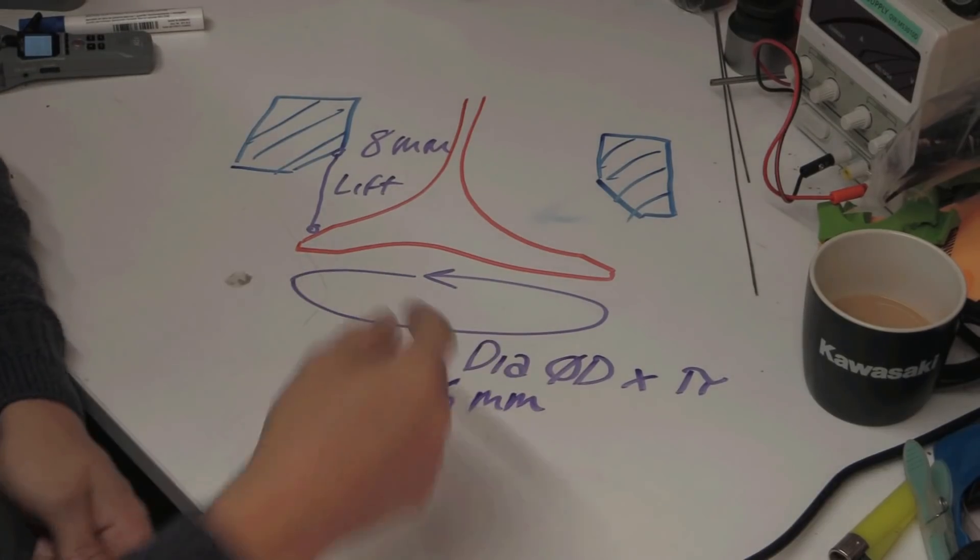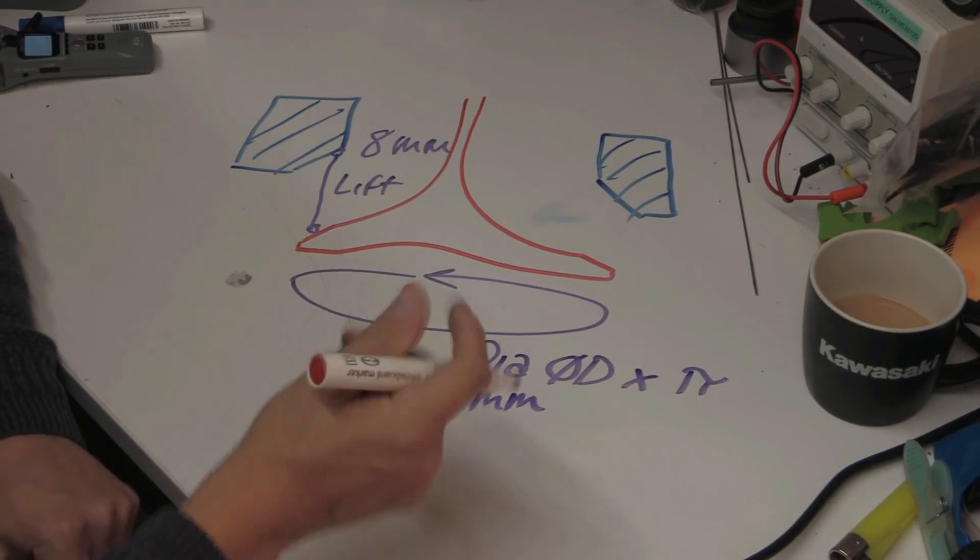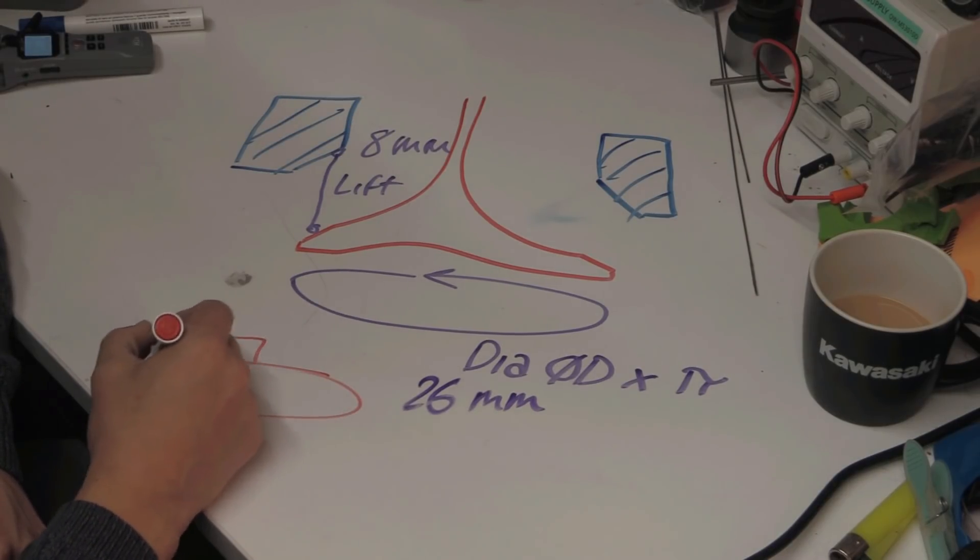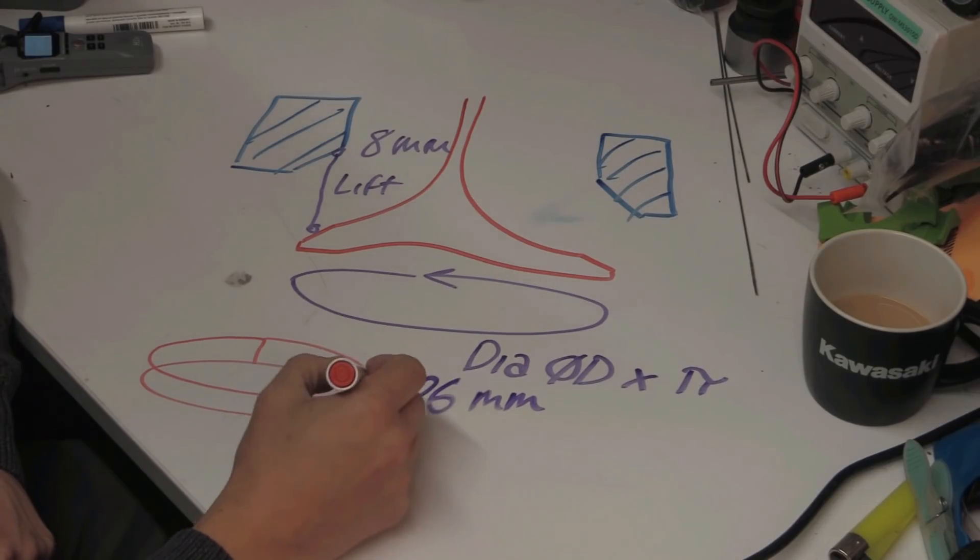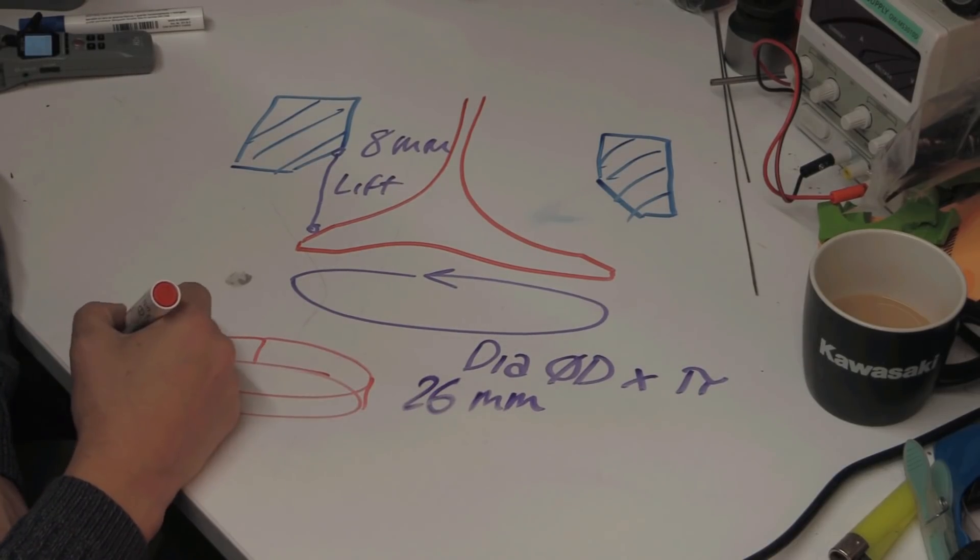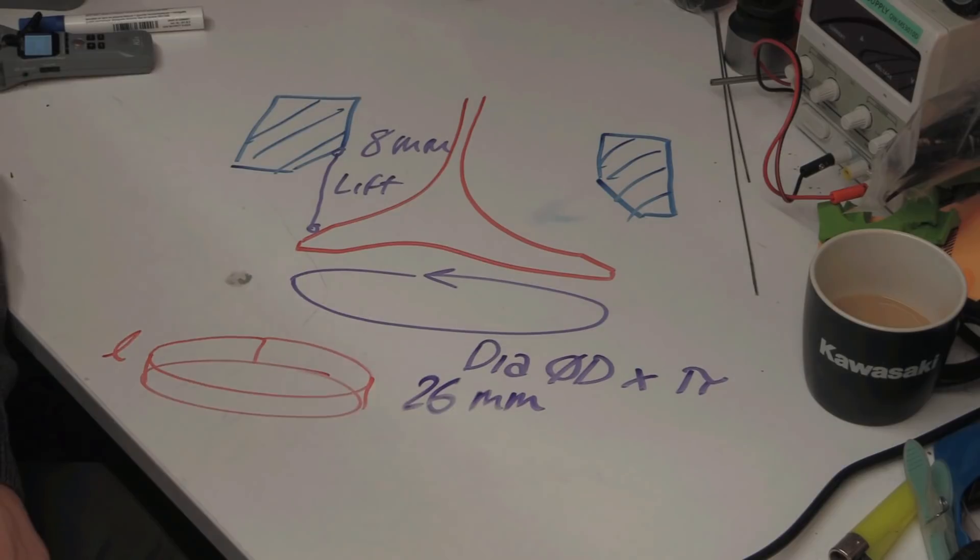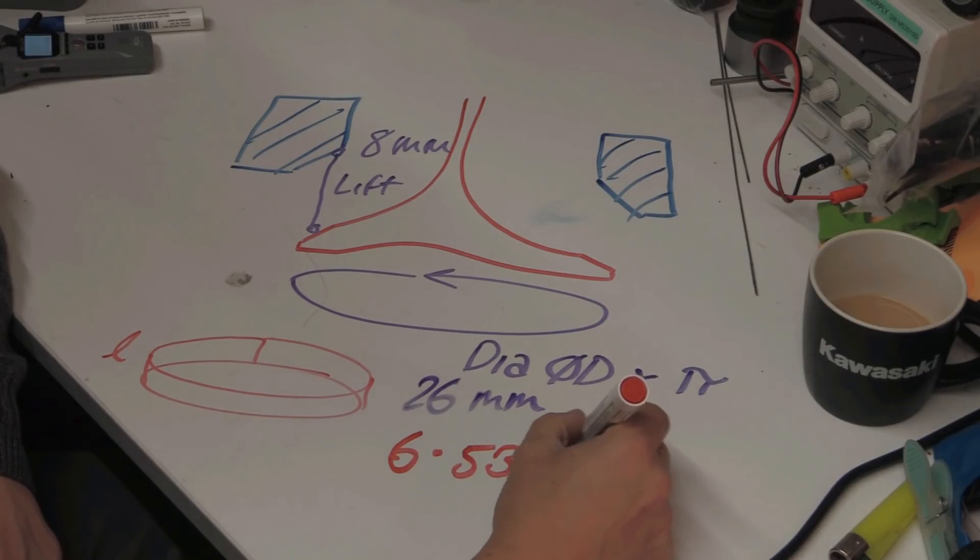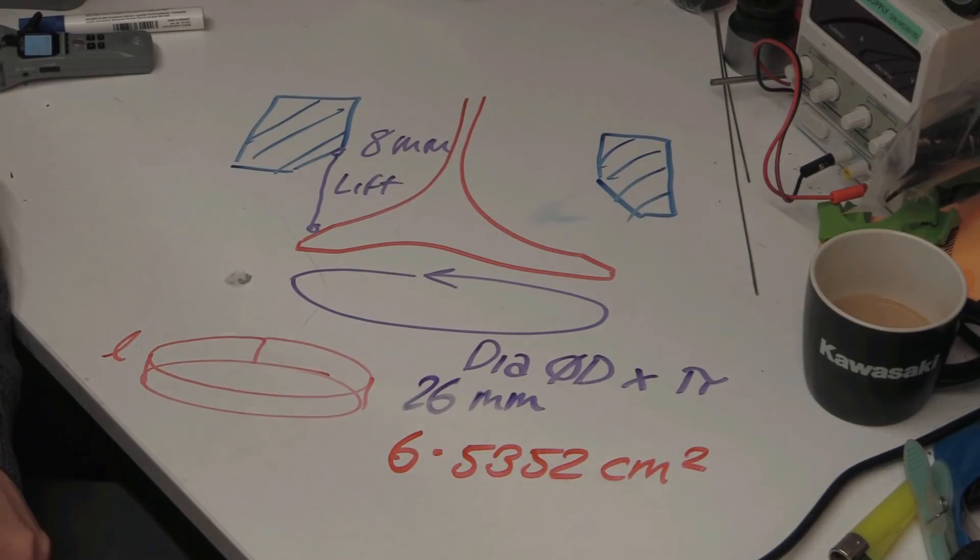Once you do all this, you work out your diameter and your height. Basically what you're trying to do is you're trying to make a cylinder in a sense. You're trying to find out the circumference around that circle and then you times it by your length. What you get when you do all this is you get 6.5352 centimeters squared. That is the area that the air can pass through.